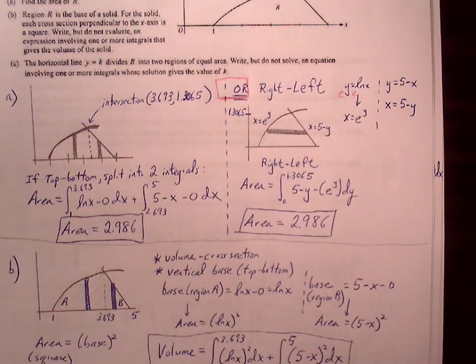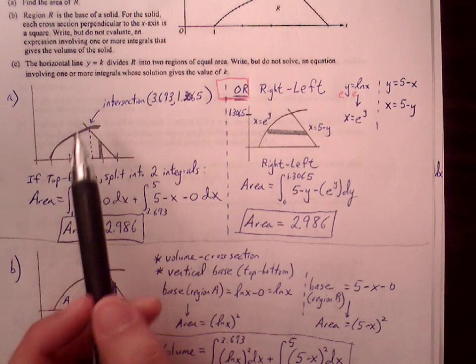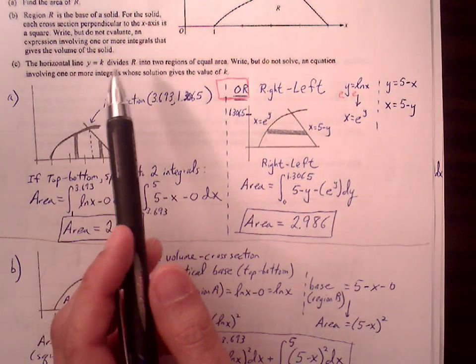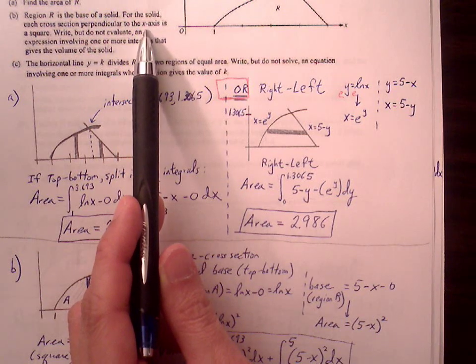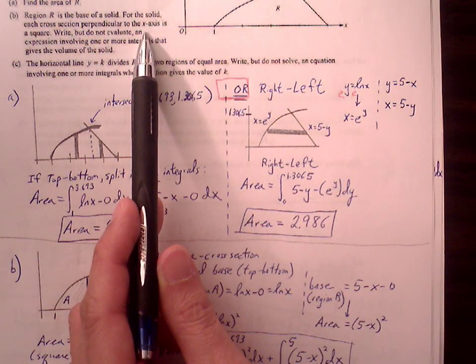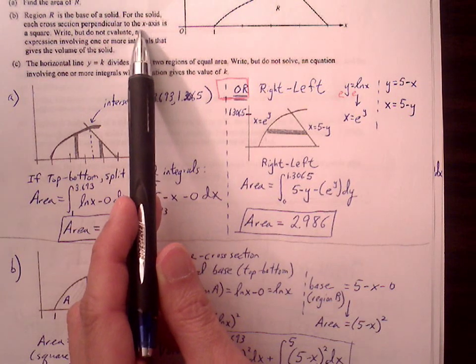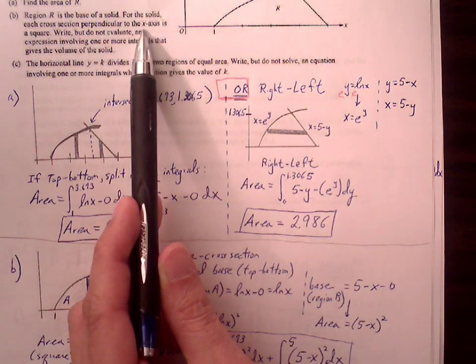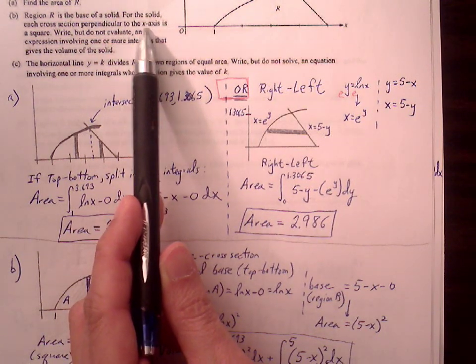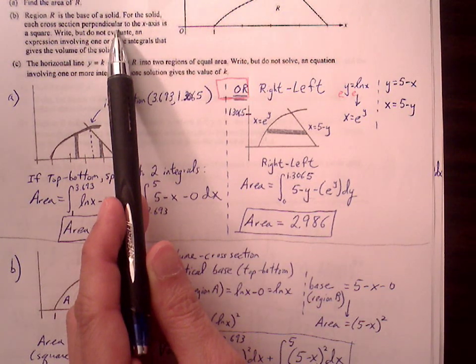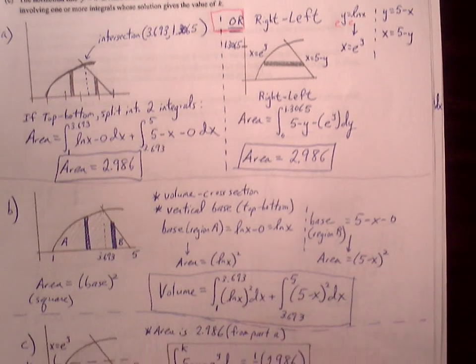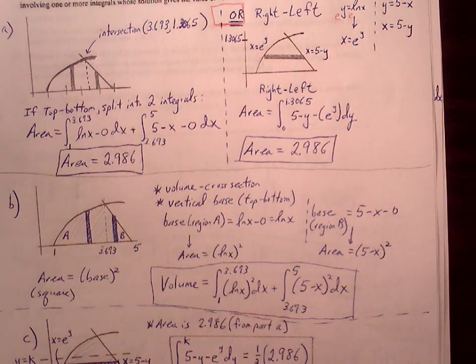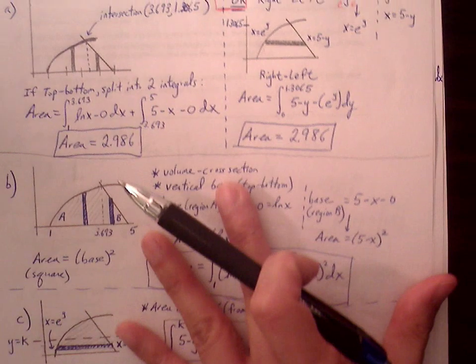Part B: region R is the base of a solid. For the solid, each cross section perpendicular to the x-axis. We have to figure out our orientation of the base length—is it vertical or horizontal? X-axis, that's the horizontal line. Perpendicular means it's going to have to be vertical. So we're drawing a vertical base, top minus bottom.